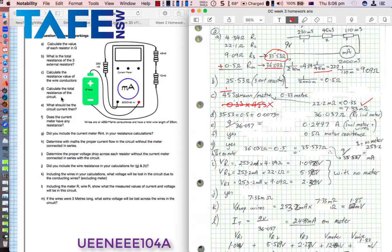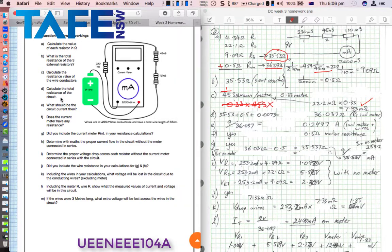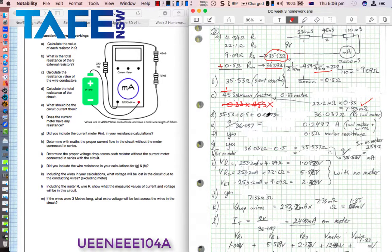Part D, calculate the total resistance of the circuit with the wire included. Here's my wire. So 35.53 for the three external resistors, 0.5 ohms for the meter, and 7.3 milliohms for the wire, which is quite small and that's what we'd expect. That adds up to a total of 36.03 ohms. You can see up here we had 36.03 plus the wire. That was without the wire, and the wire is that extra little 0.7 on the end.